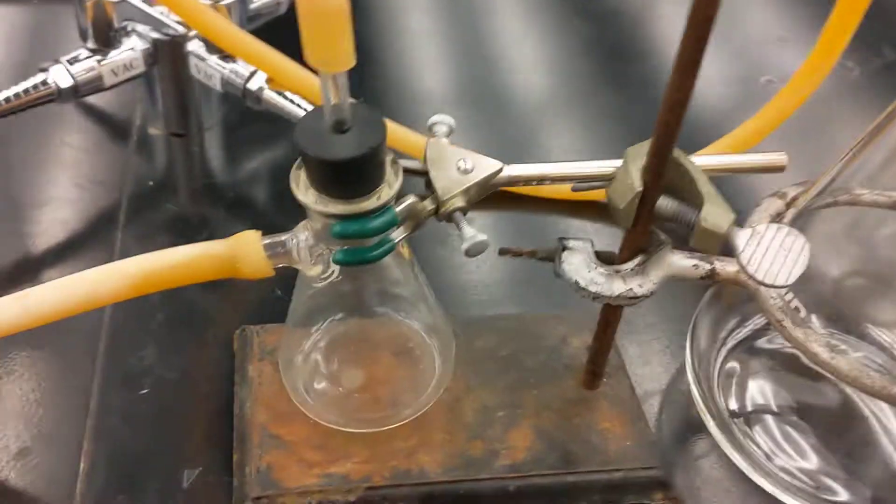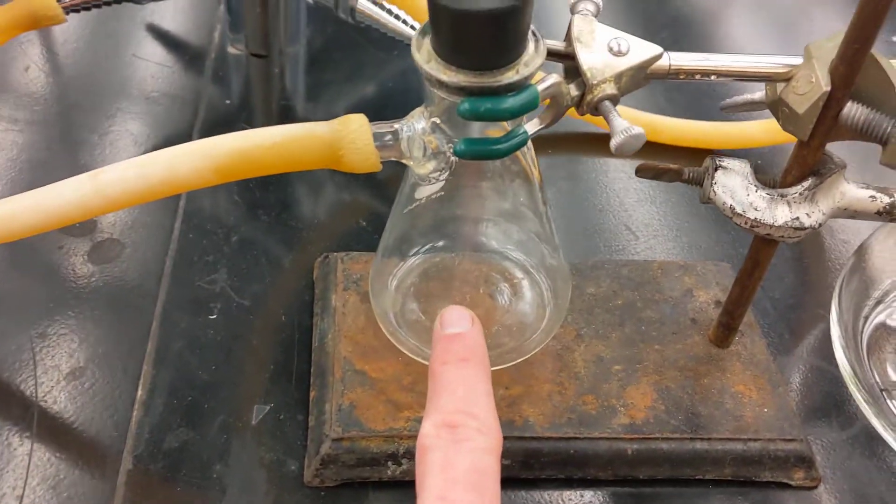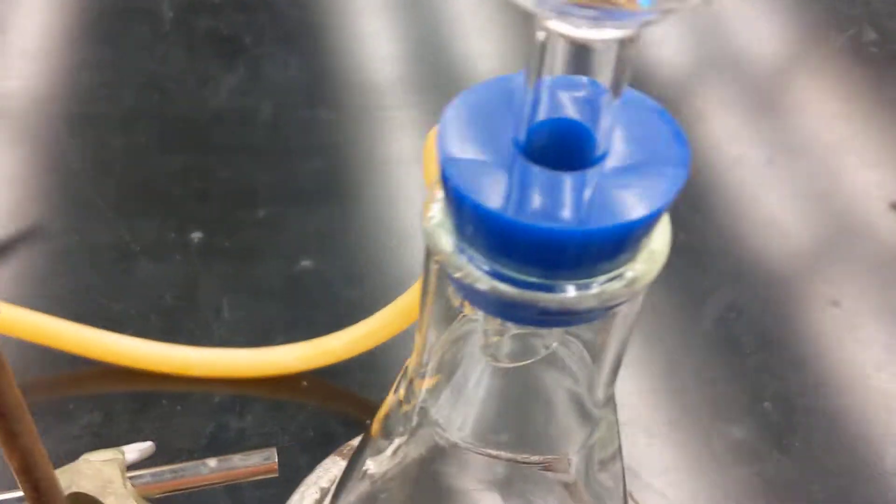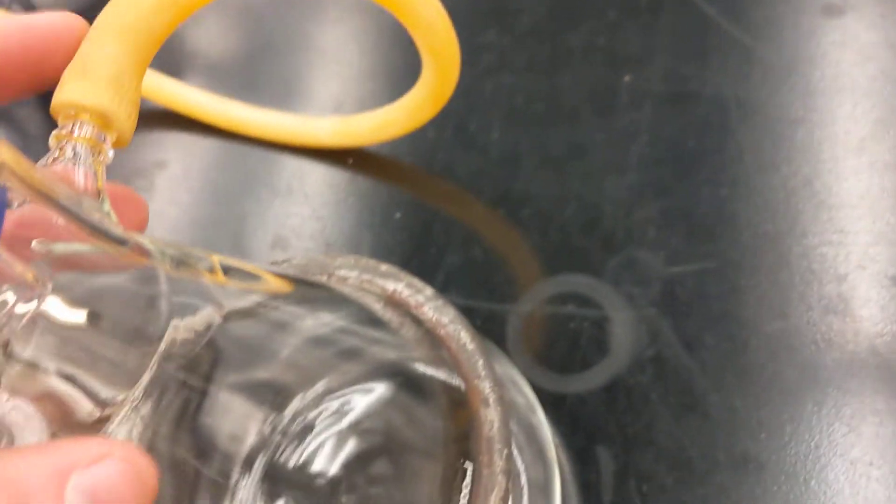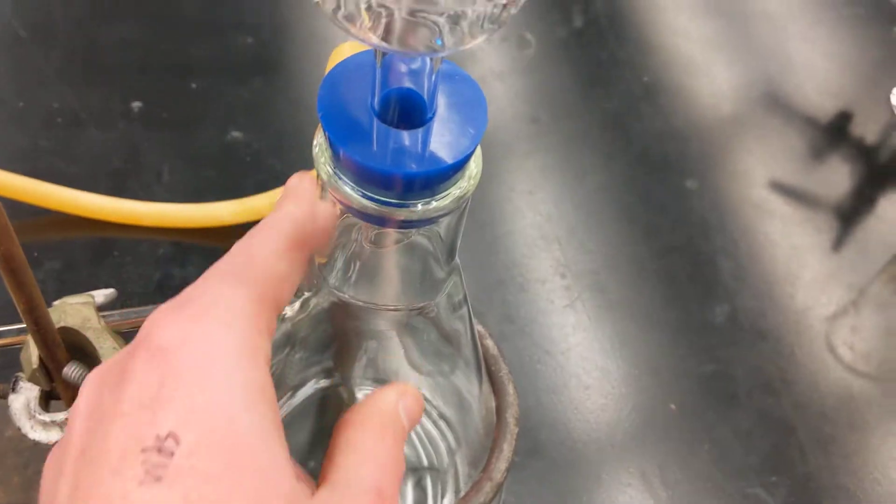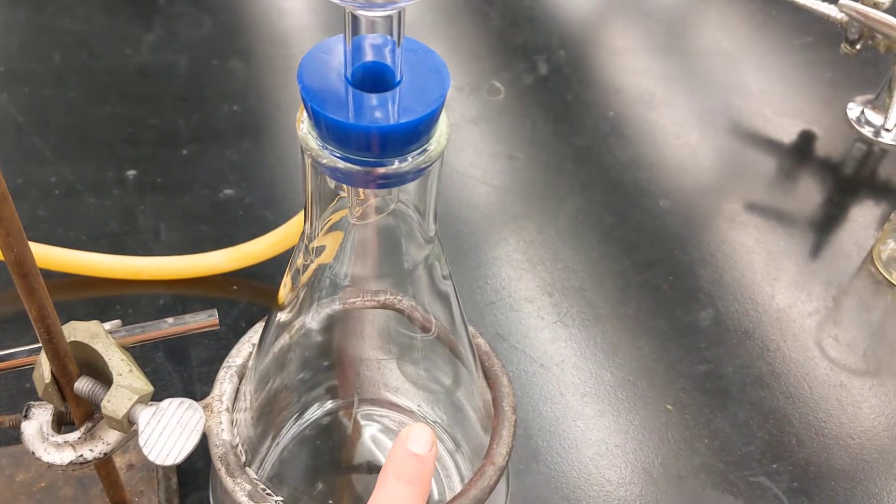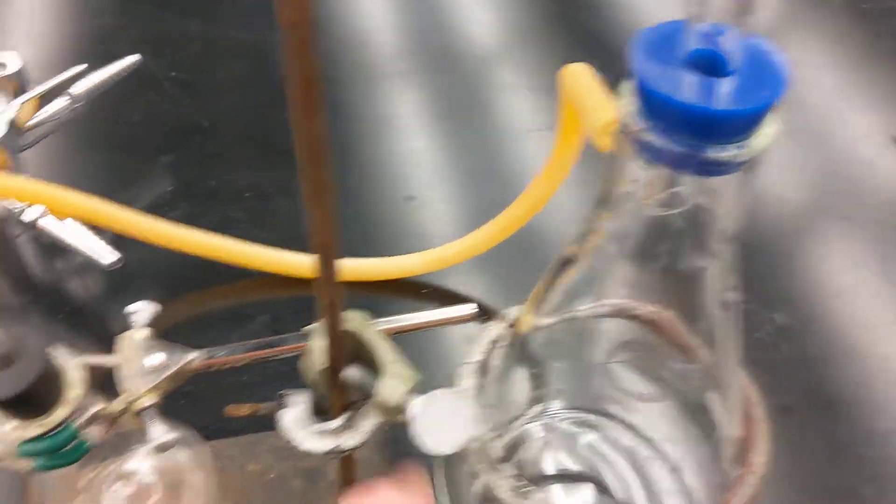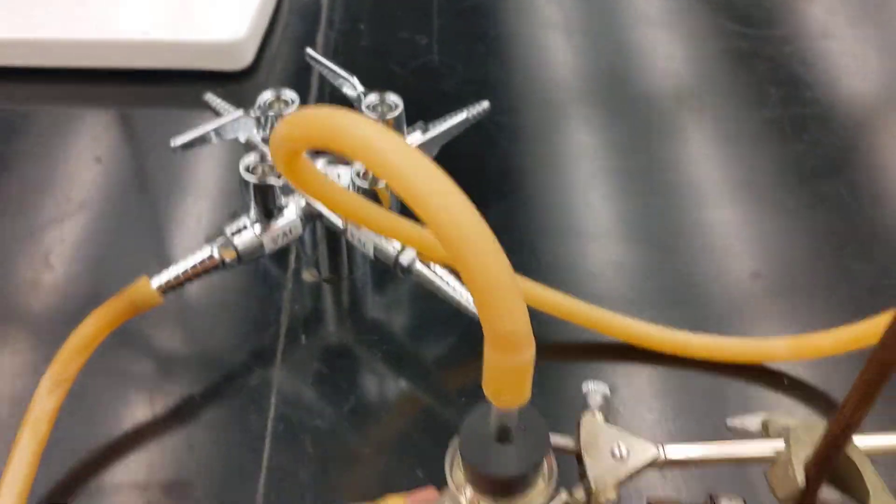The line runs to a small sidearm flask here, onto the side, and then out at the top and into the sidearm of a 1 liter flask. This is where the sample will be filtered into. This is a trap in case some water goes through the vacuum line. It won't destroy our vacuum system.